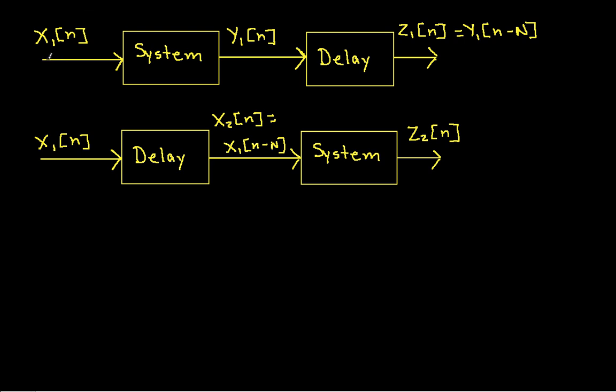If I take a signal x1 and put it into the system, out comes some other signal y1, and then I take that y1 and I delay it for cap N samples. So I take the signal, run it through the system now, and then wait for a while. Down here, I take the same signal, I wait for a while, I delay it by cap N samples, and then I run it through the system.